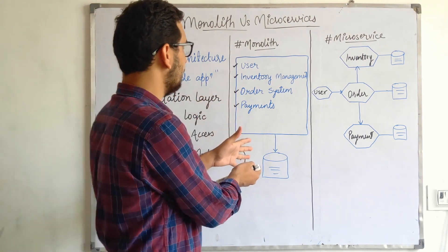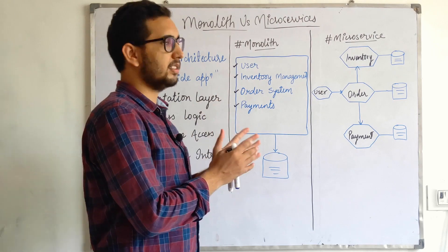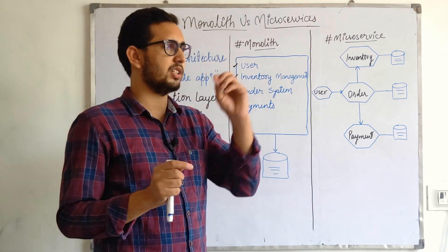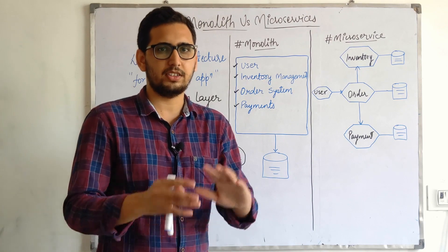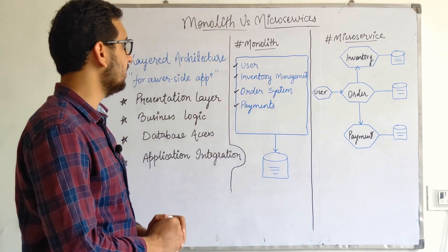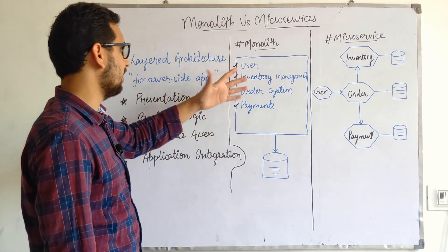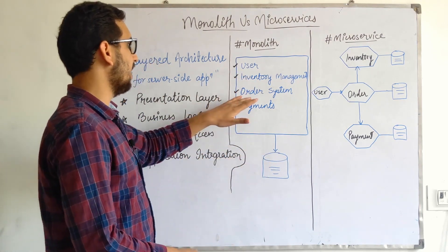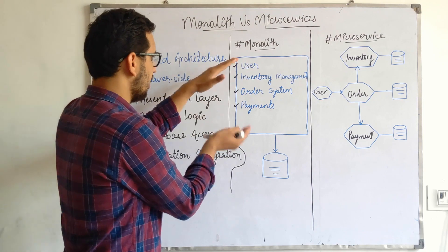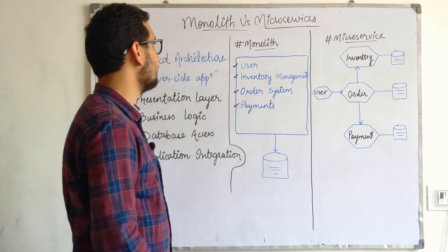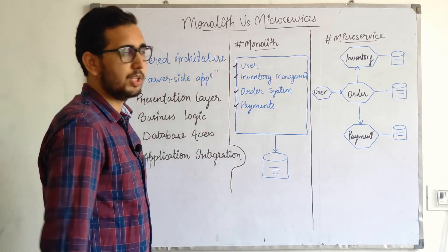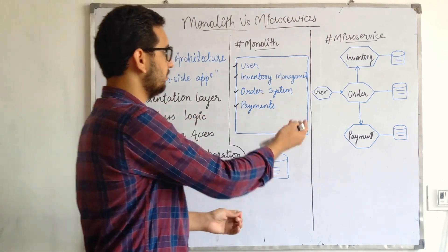Coming back to monolith versus microservices. Monolith is where you have an application — say an order management system — where a user can browse products, manage inventory, place orders, and make payments. A monolith contains all this code in a single codebase, maybe the UI as well, and it interacts with a single source of data.